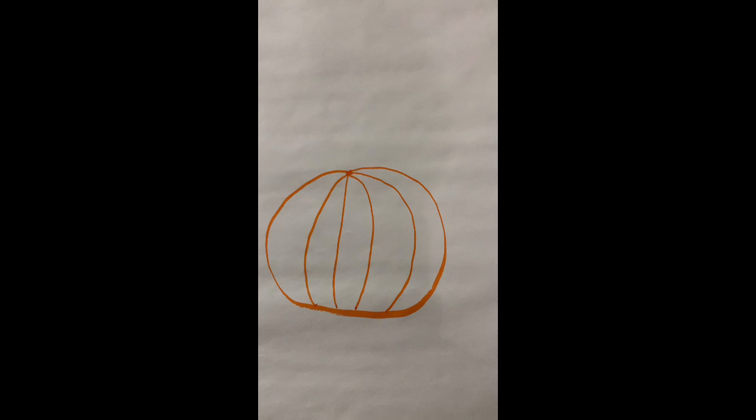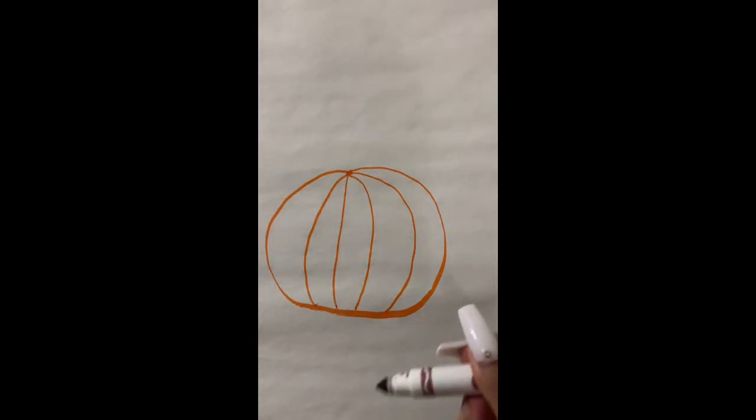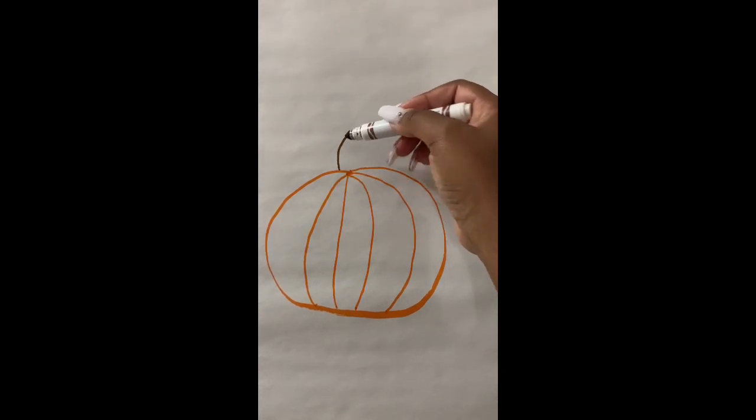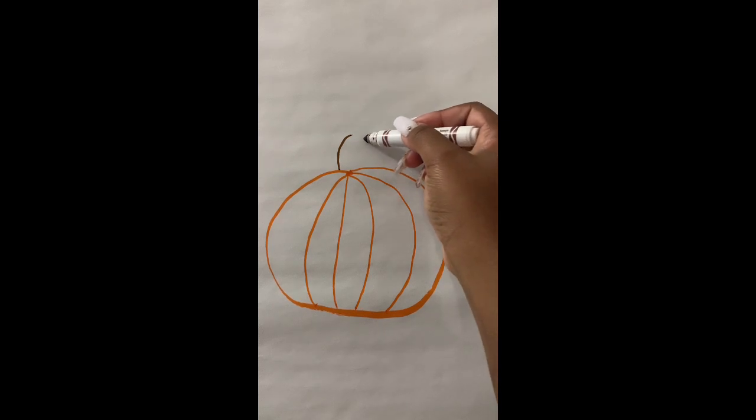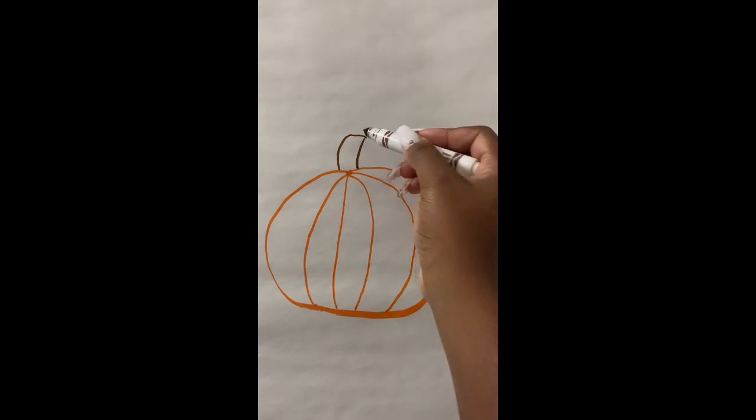I'm gonna take my brown and go to the top and draw a curved line up, another curved line on the side, and I'm gonna connect those two lines at the top. Now I have a stem and I can go ahead and color that in.